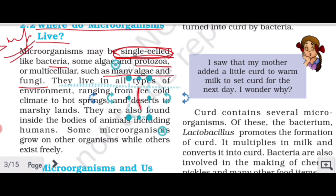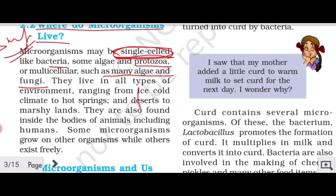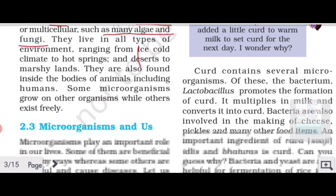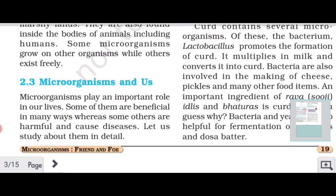Multicellular microorganisms include many algae and fungi. They live in all types of environments, ranging from ice-cold climates to hot springs, and deserts to marshy lands. They are also found inside the bodies of animals including humans. Some microorganisms grow on other organisms while others exist freely.